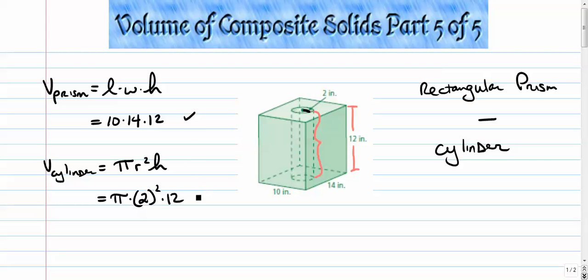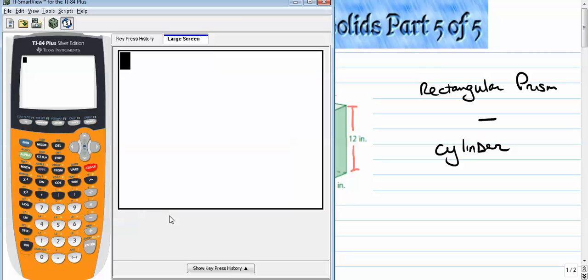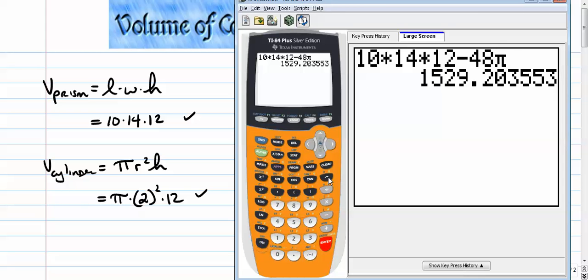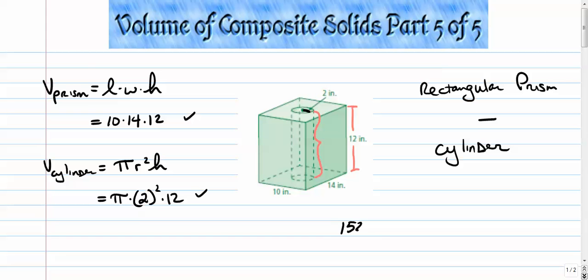We're just going to take this thing minus this thing. 10 times 14 times 12 minus 2 squared is 4, 4 times 12 is 48, times pi. So I get 1529.204, which is the volume of the entire prism with the cylinder removed. Okay, next up.